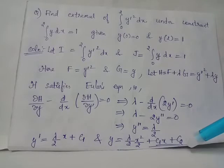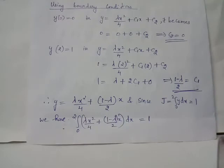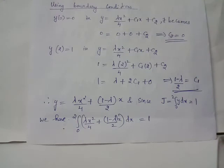Applying the boundary condition y(0) = 0 gives c₂ = 0. Applying y(2) = 1 and simplifying gives c₁ = 1 − λ/2. Substituting c₁ and c₂ back, the expression for y becomes y = (λ/4)x² + (1 − λ/2)x.